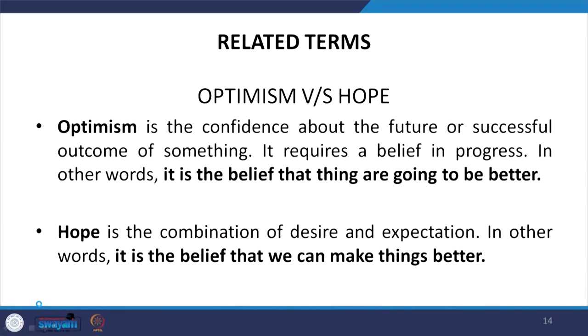Related terms: optimism versus hope. Hope is a combination of desire and expectation — it is a belief that we can make things better, as discussed in psychological capital. Optimism is a confidence about the future or a successful outcome — it is a belief that things are going to be better. In the case of hope, a person makes an attempt and effort and then thinks things will be better, while optimism is simply the belief that things will be better.